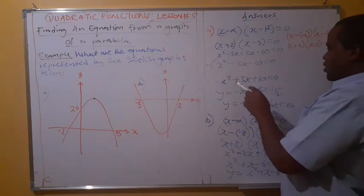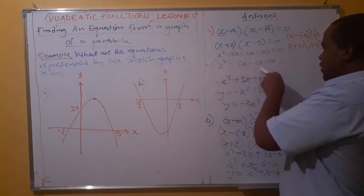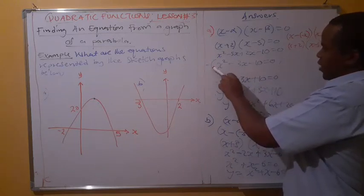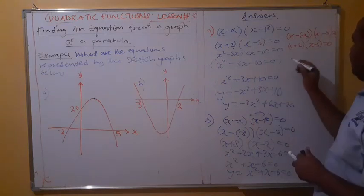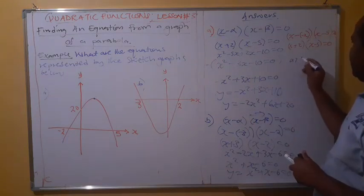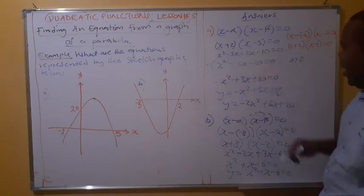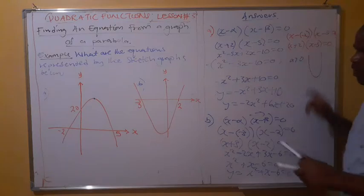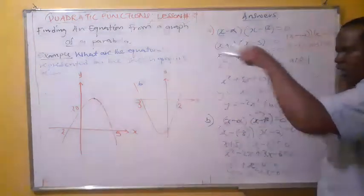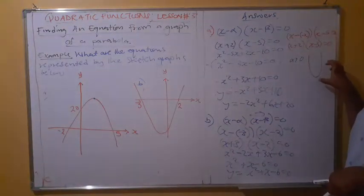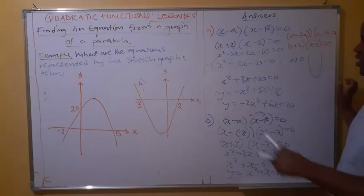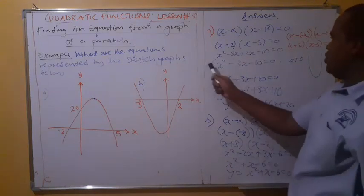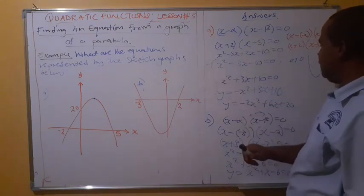Now you must look at what we have here. Look at the value of a — a is positive 1, which is greater than 0. We are saying if a is greater than 0, then the graph should be a minimum. But look at our graph — our graph is a maximum, which is a contradiction to what we are saying. So what do you do in this case? You introduce a negative here.